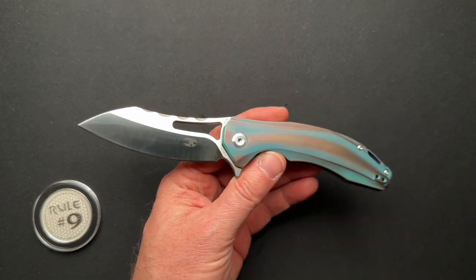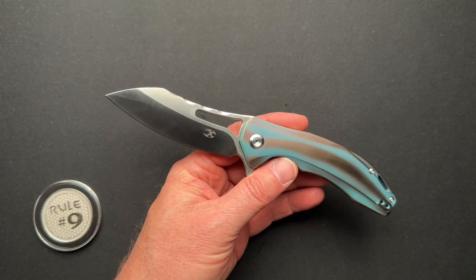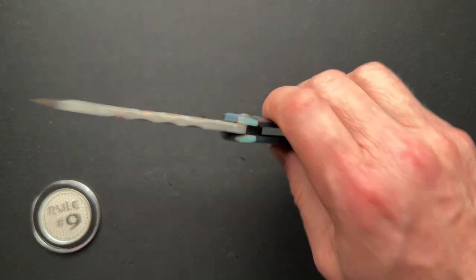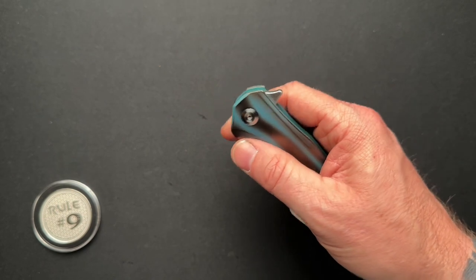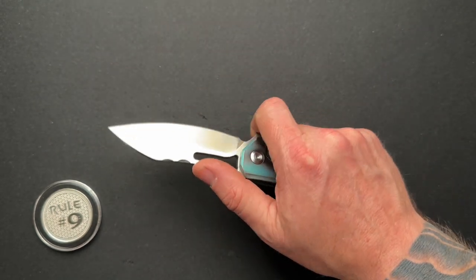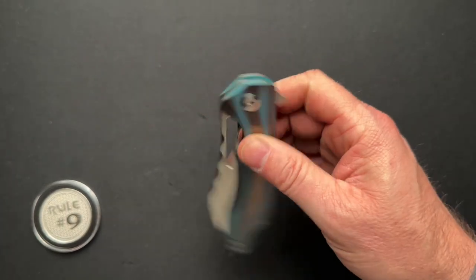But let's talk about the specs. It's four and five-eighths closed, eight and one-eighth overall, 3.56-inch blade. You know, all the normal stuff. S35VN weighs in at 4.6 ounces, runs on ceramic bearings. Kim Ning is the designer of this one.